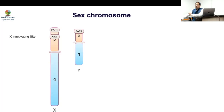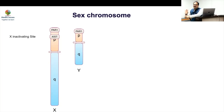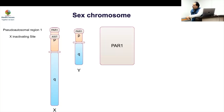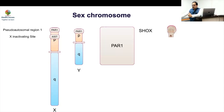Turner syndrome essentially represents the deficient action of particular genes that are deleted in the pseudo-autosomal region. The pseudo-autosomal region 1 (PAR1) is very significant — it is located at the end of both X and Y chromosomes and contains a number of important genes. The most important from a growth and skeletal perspective is the SHOX gene.